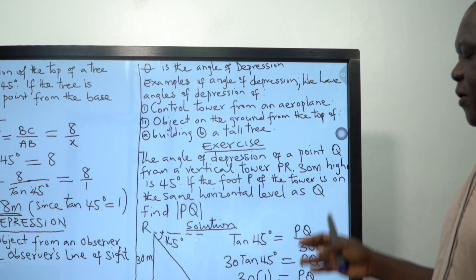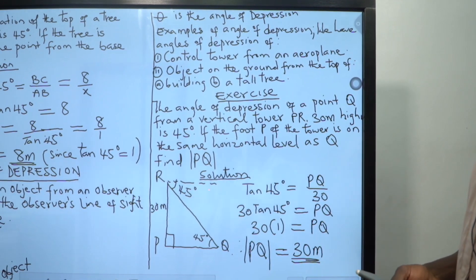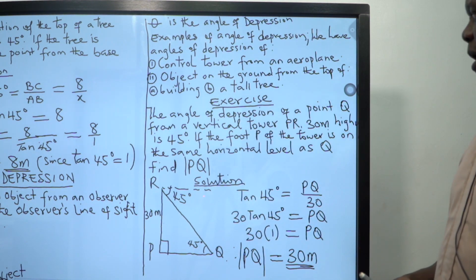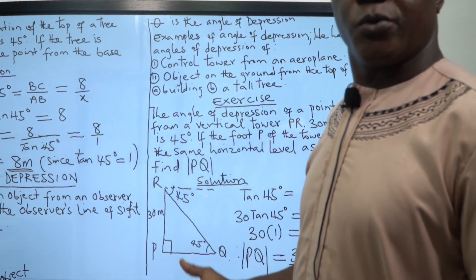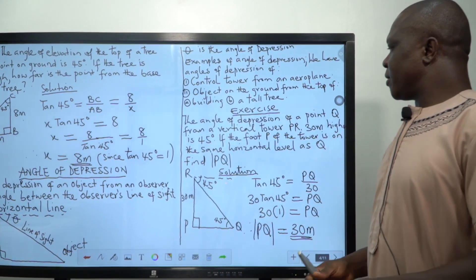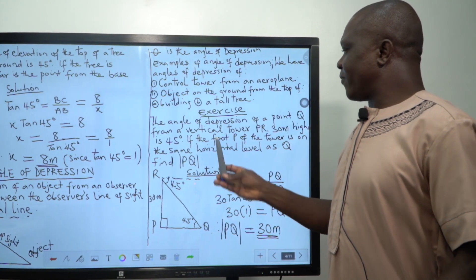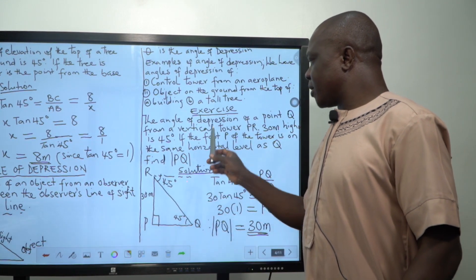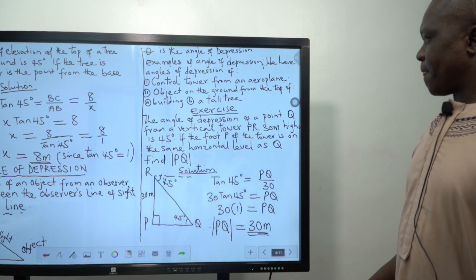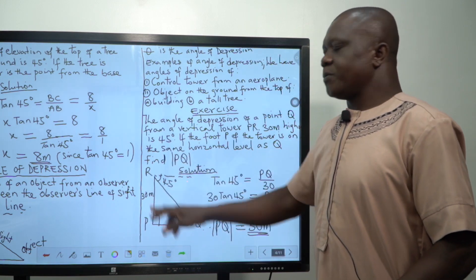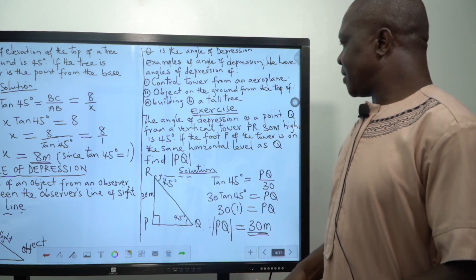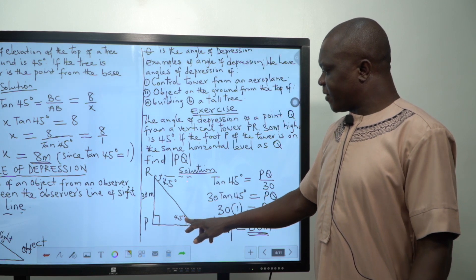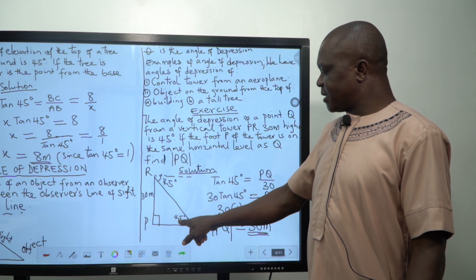Then exercise. The angle of depression of a point Q from a vertical tower PR, 30 meters high, is 45 degrees. If the foot P of the tower is on the same horizontal level as Q, find PQ. I told you that if you have two letters and you have a stroke, what it means is a line PQ. You can see my diagram here. This is the top of the tower. And this is where the observer is now, the position I termed as R. A formed angle 45 degrees because angle 45 is given.